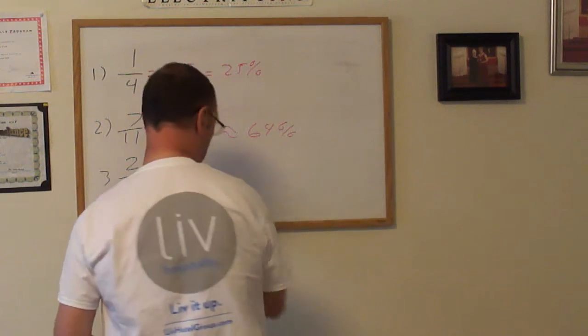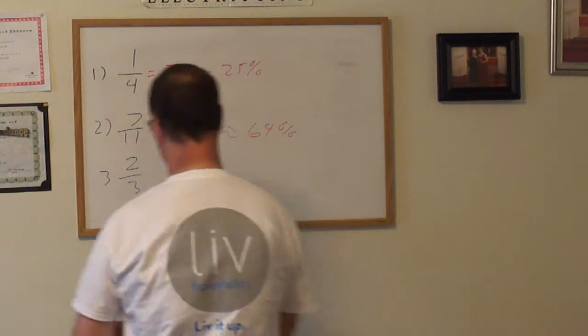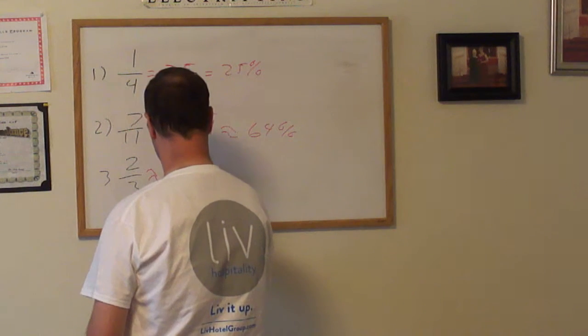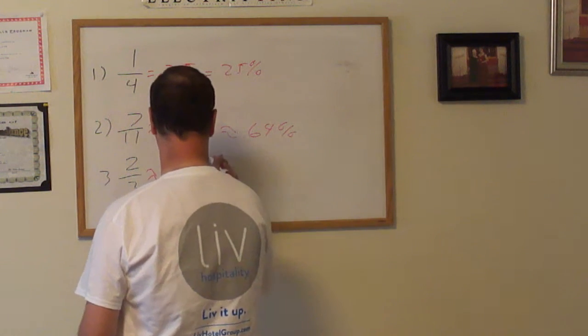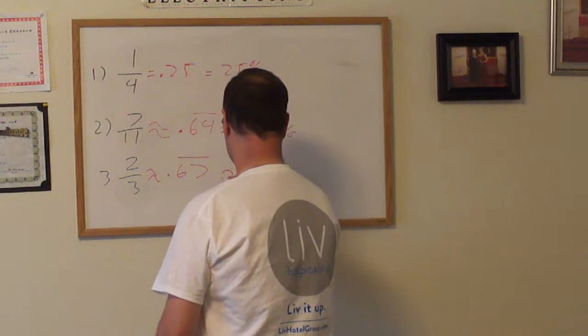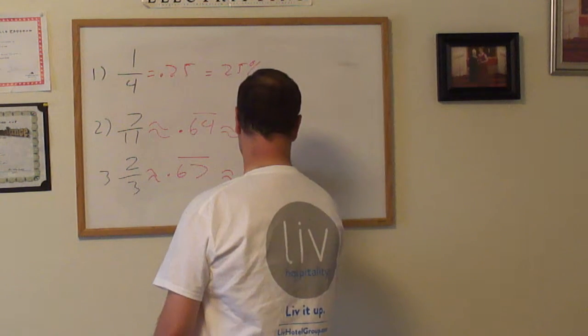For repeating decimals, 0.67 repeating, approximately 67%.